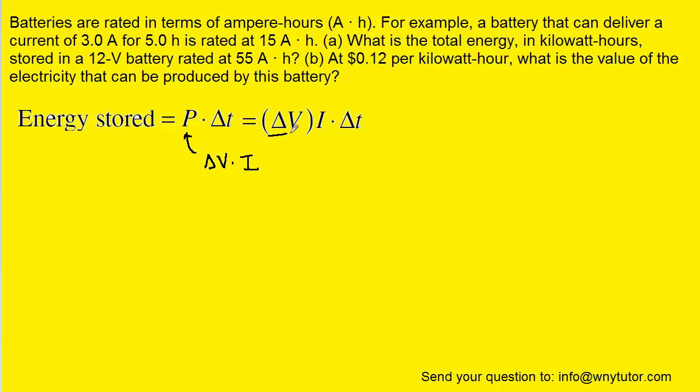So we've substituted delta V times I in for the power P. Now the question notes that the potential difference of the battery is 12 volts, so we know that. And then we have this term I times delta T.